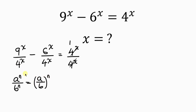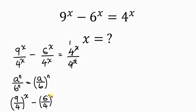Applying this here, we get 9 over 4 with a combined exponent of x, minus 6 over 4 with a combined exponent of x, and this is equal to 1.